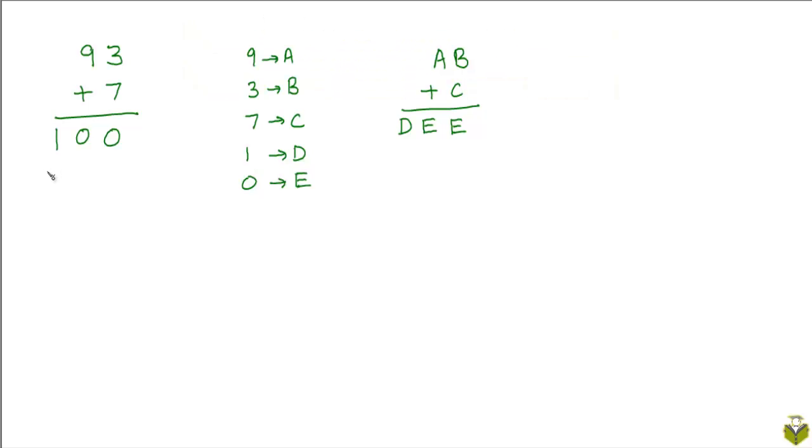One thing to keep in mind regarding the creation of a cryptarithm puzzle is that we cannot always create such puzzles by taking any arbitrary arithmetic exercise and substituting the digits by letters, because we may find when trying to reconstruct the digits that there are multiple possible values for them. We want every cryptarithm to have a unique solution.